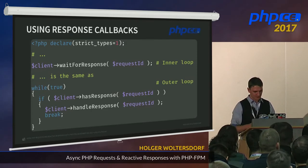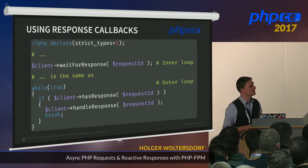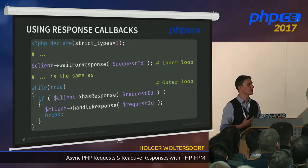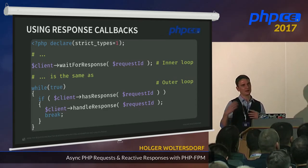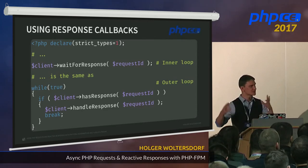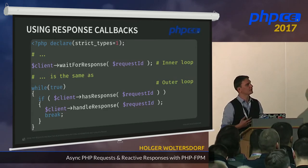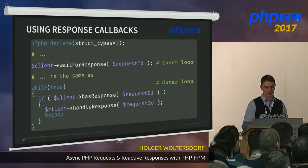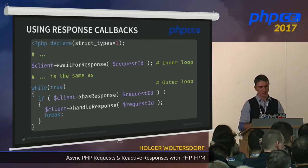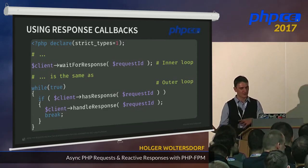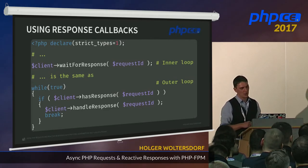When you send a request, I also added event loop integration — inner loop and outer loop integration. Inner loop means the client completely handles waiting for the response. But if you already have an outer loop, for example using event loop libraries like ReactPHP, you can ask the client if there is a response for a given request ID and handle it yourself.